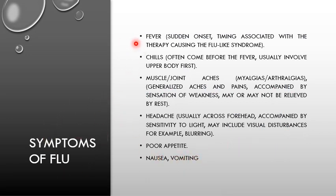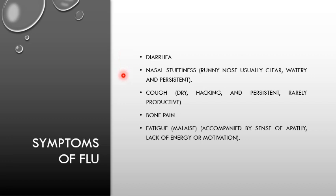Symptoms of flu include fever of sudden onset, unlike common cold where fever is mild and usually gradual in onset. Chills often precede the fever and usually involve the upper body first. Muscle and joint ache, headache usually across the forehead accompanied by sensitivity to light, and may include visual disturbances, poor appetite, nausea, vomiting, occasionally diarrhea, nasal stuffiness. Cough may be dry, hacking, and persistent, and rarely productive unless complicated by secondary bacterial infection. Profound fatigue in the form of malaise accompanied by a sense of apathy.